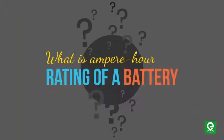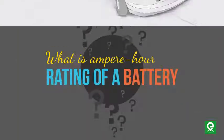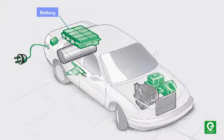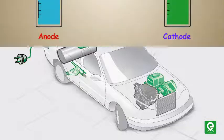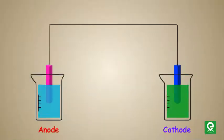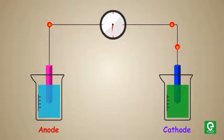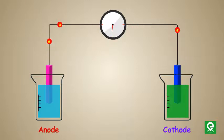Ampere hour — all of us must have seen a lead acid battery present in the inverters in our homes or in our cars. Batteries create an electron flow in a circuit by exchanging electrons during ionic chemical reactions.